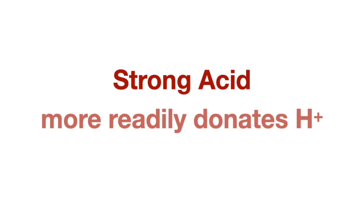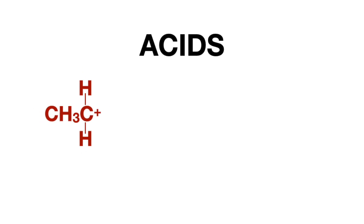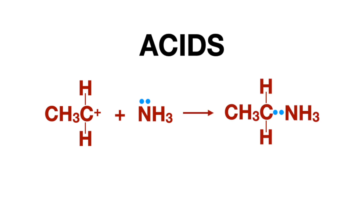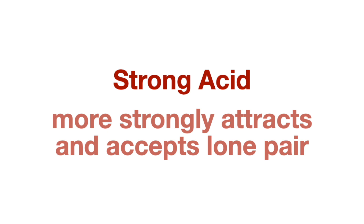So a strong acid is one that easily releases a proton and doesn't reform a bond with it. Lewis acids are lone pair acceptors, meaning a compound that can form a bond with another compound or atom that has a lone pair to contribute to the bond. In this case, a strong acid is one that has a greater affinity for and more easily forms a bond with an atom or compound with a lone pair.